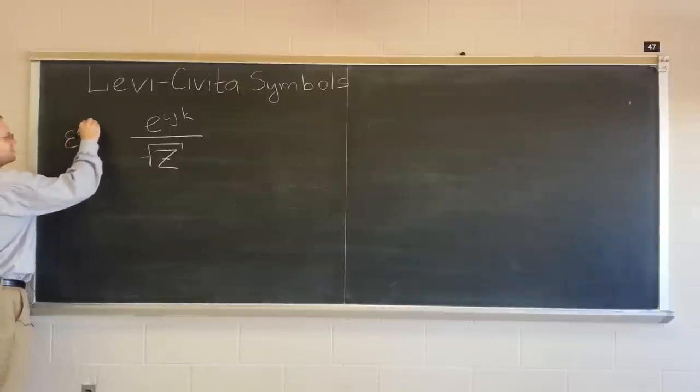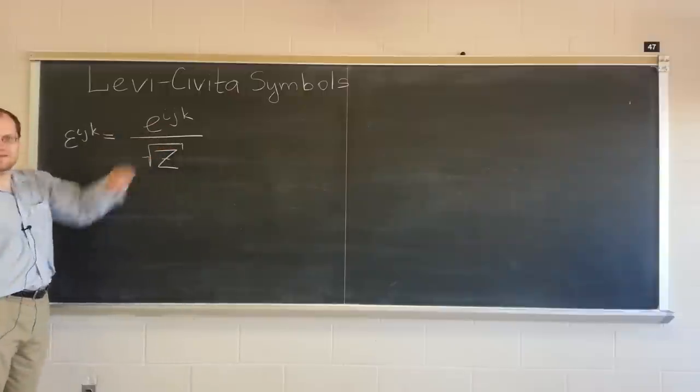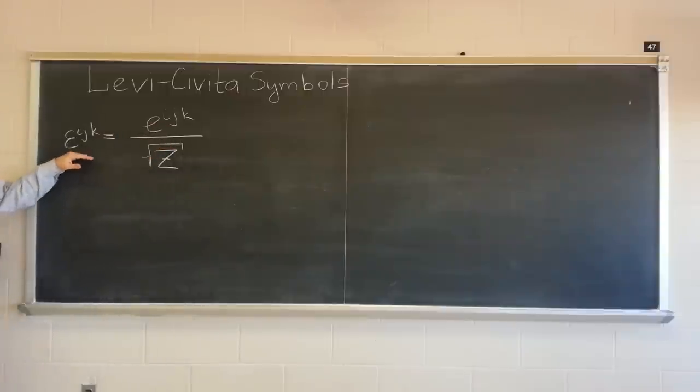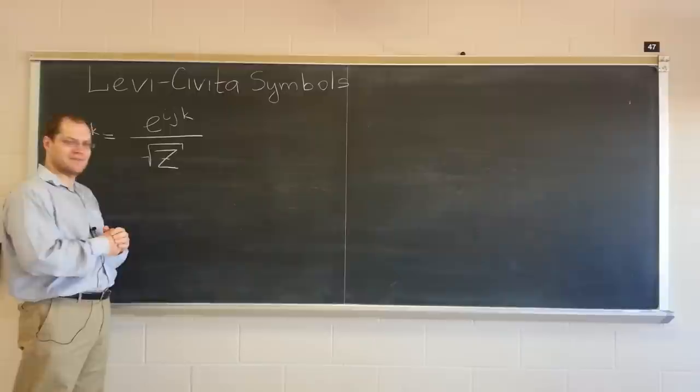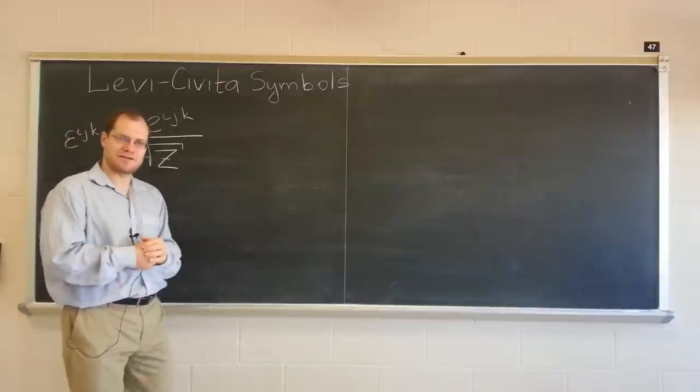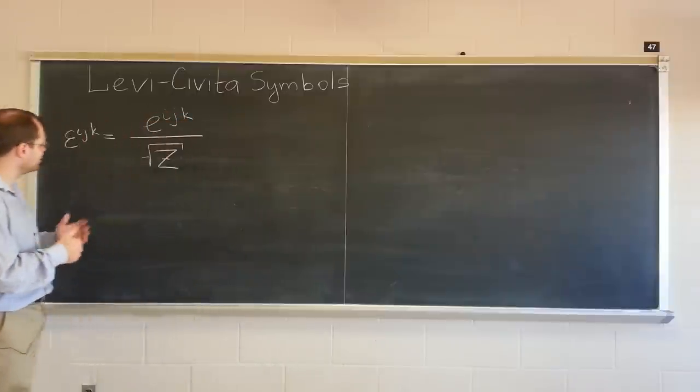So this is denoted by the letter epsilon ijk. Turns out to be a much more important object, I would say, than this symbol. And it's a tensor. And this is called the Levi-Civita symbol. But of course, it should be called the Levi-Civita tensor.